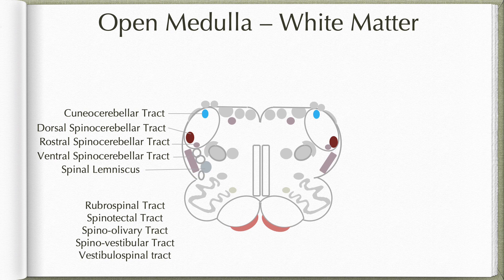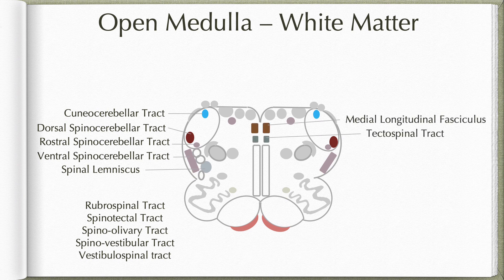Behind the medial lemniscus, we also find a pair of medial longitudinal fasciculus and a pair of tectospinal tracts located on either side of the midline.